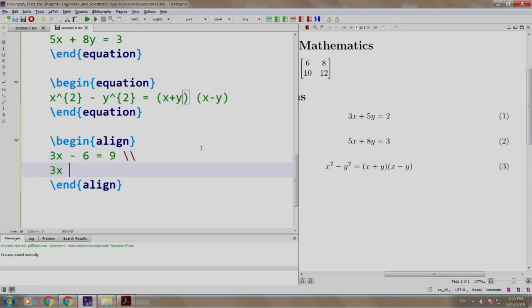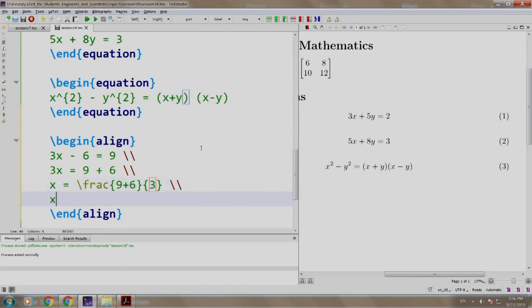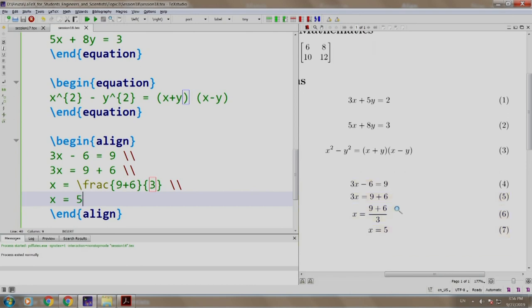3 x is equal to 9 plus 6 slash slash then finally, we say x is equal to fraction of 9 plus 6 and denominator is 3 and we take a new line again and we say finally, x is 5. Let us build and run.